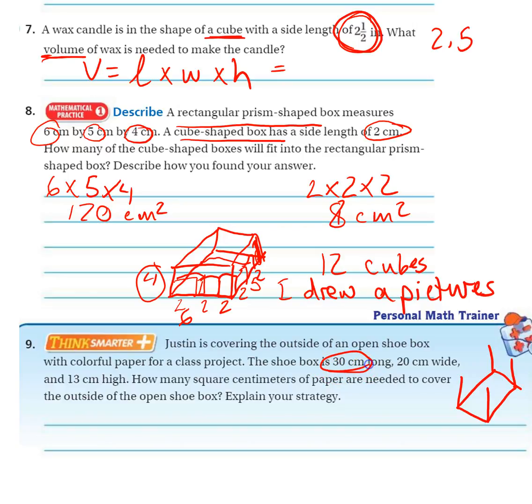The shoe box is 30 by 20 by 13. How many square centimeters of paper is needed to cover the outside of the shoe box? Explain your strategy.